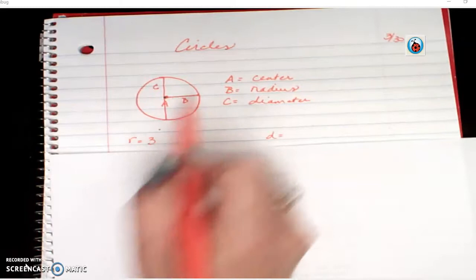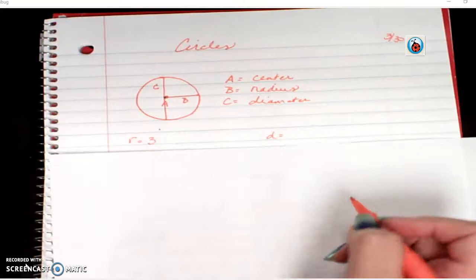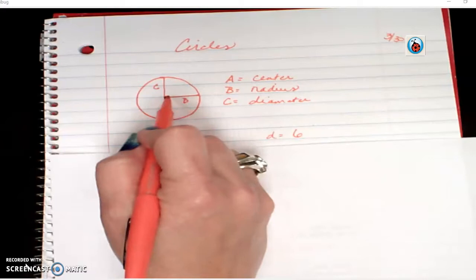If the radius is halfway and it's 3, how much would the diameter be? Well, you times it by 2 and you would get 6. Because if it's halfway across is 3, the other half is 3, together that would make 6.